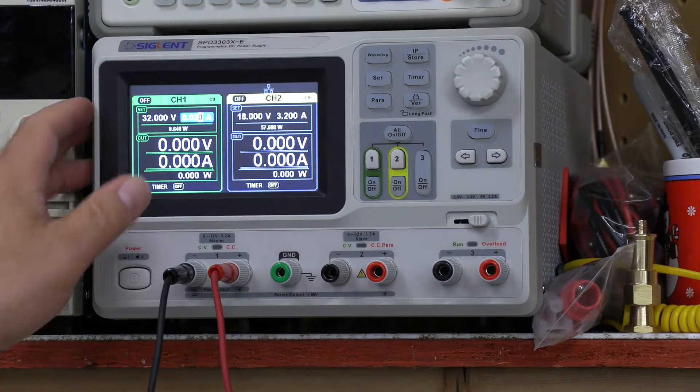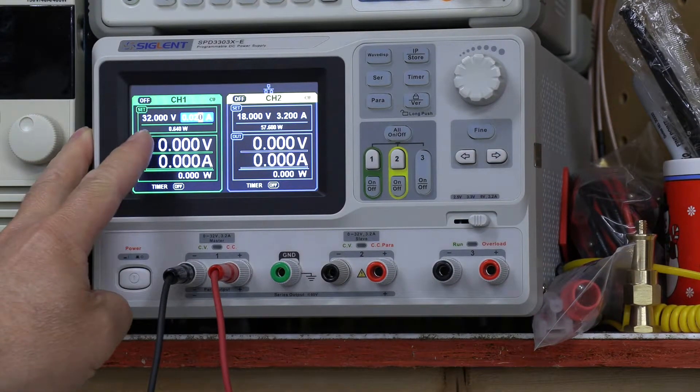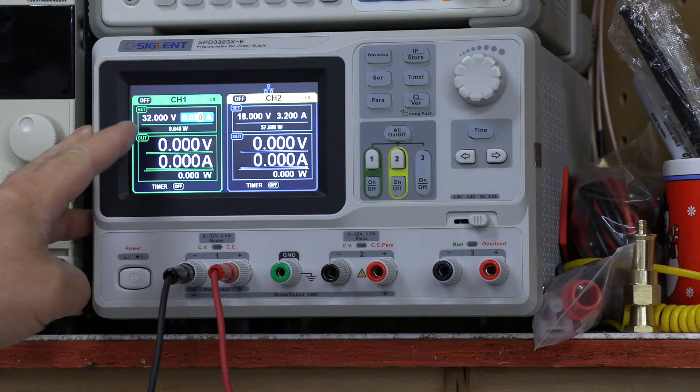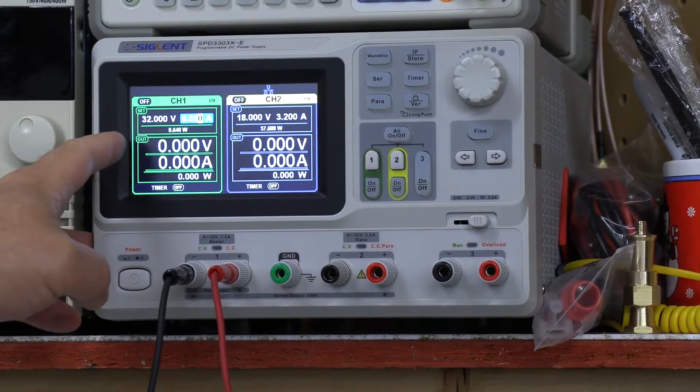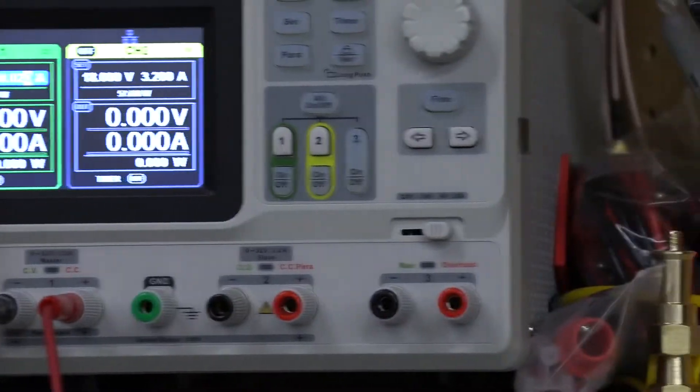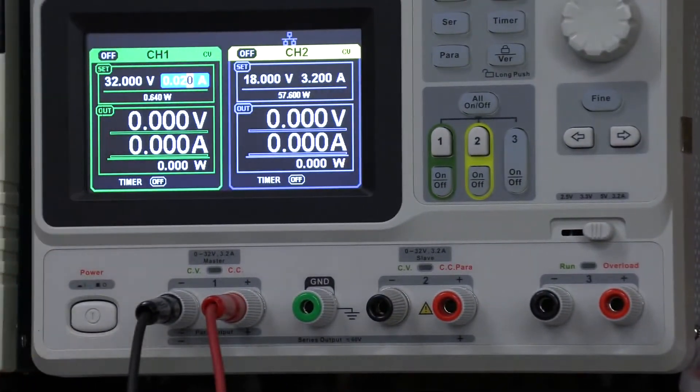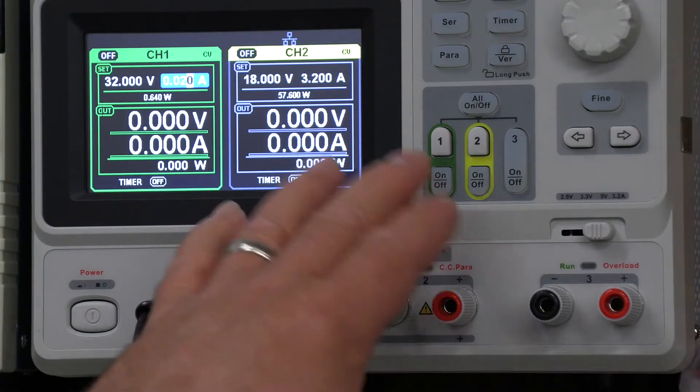So you set your power supply up. I've got the voltage cranked up as high as it'll go at 32 volts on the one channel. Let's see if I can get in there a little bit better. And I've got the current set to 20 milliamps. And I have the channel turned off.